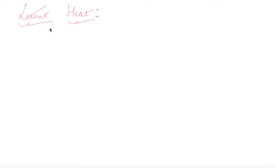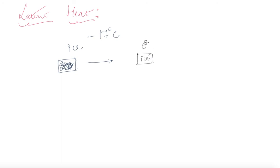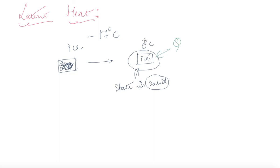Now let's discuss latent heat. Consider a block of ice at minus 17 degree Celsius. When you apply heat, it comes to 0 degree Celsius but is still in the solid state. If you apply more heat, the temperature won't change, but the ice converts into the liquid state — and the temperature is still 0 degree Celsius. Both ice and water can exist at 0 degree Celsius.